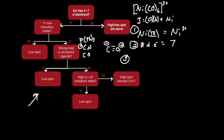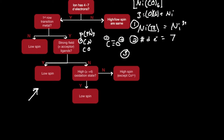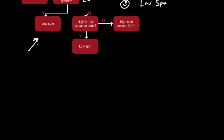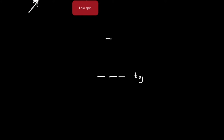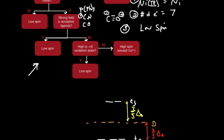So we write low spin. Next, we need to draw our crystal field diagram. Here are our t2g orbitals, and these are our eg orbitals. The degenerate energy level sits in the middle. The energy difference from eg up to degenerate is three-fifths delta octahedral, and the difference from t2g down to degenerate is two-fifths delta octahedral. It has seven electrons in low spin.